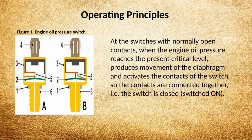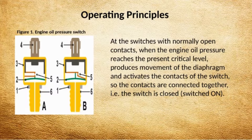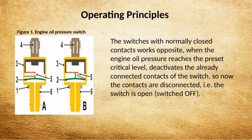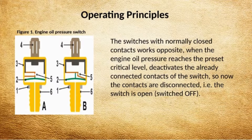For switches with normally open contacts: when the engine oil pressure reaches the preset critical level, it produces movement of the diaphragm and activates the contacts of the switch, so the contacts are connected together — that is, the switch is closed, switched on. For switches with normally closed contacts, when oil pressure is sufficient the switch is open, switched off.